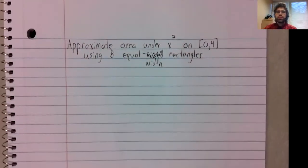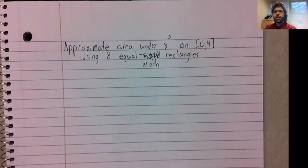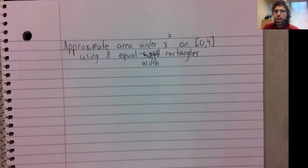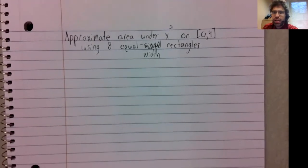Let's compute a Riemann sum. In particular, let's approximate the area under x squared on the interval from zero to four using eight equal width rectangles.